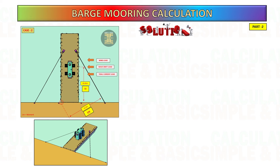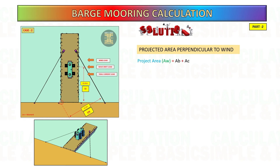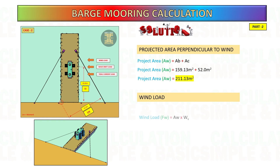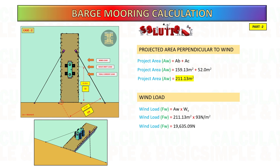Case two calculation: this calculation is almost the same as we did in case one. The difference is only the distance of the mooring line to the front edge of the barge. Next, calculate the wind load — to get this, multiply the projected area by the wind velocity pressure.